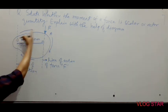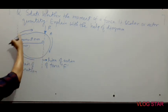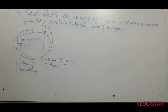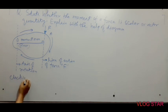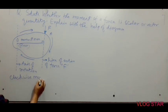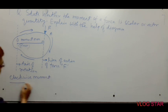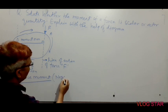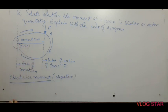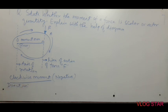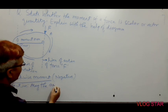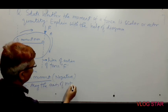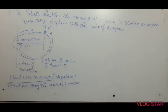Clearly, we see the direction in which the hand of the clock is rotating. That is why the moment produced will be a clockwise moment. A clockwise moment is taken as negative. If we talk about the direction, then the direction in this case will be along the axis of rotation.